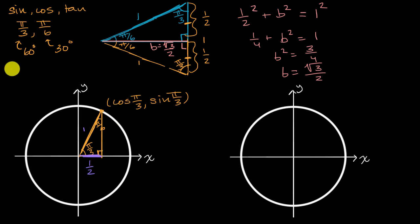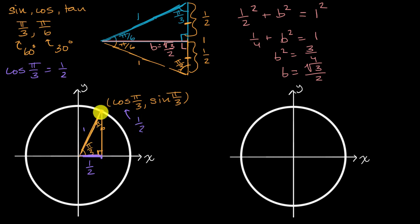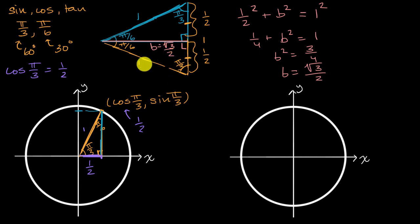So cosine of pi over three radians is equal to one half. That is the x-coordinate where this radius intersects the unit circle. Now, what about the y-coordinate — what is sine of pi over three? The y-coordinate is the length of this other side. If the hypotenuse is one and this side is one half, then the other side is square root of three over two. So sine of pi over three is square root of three over two.